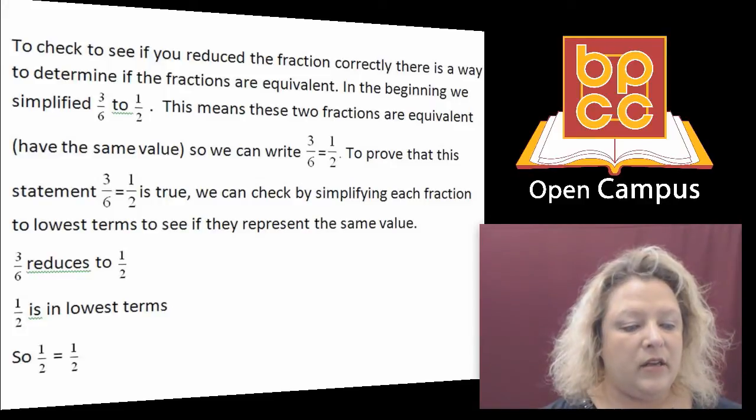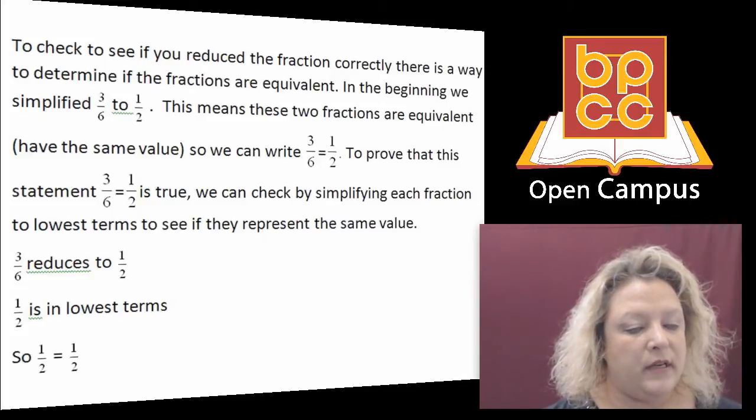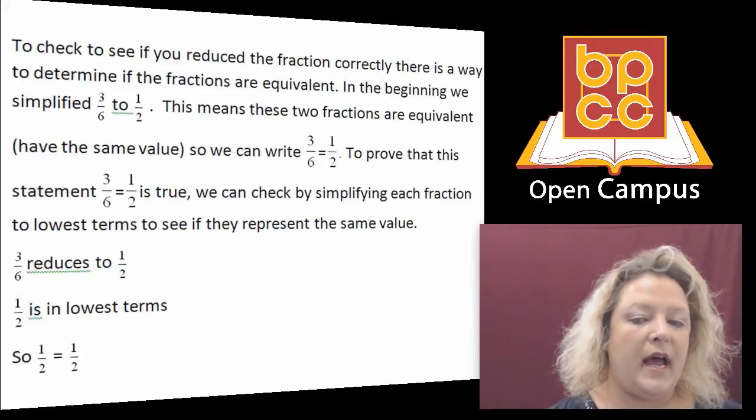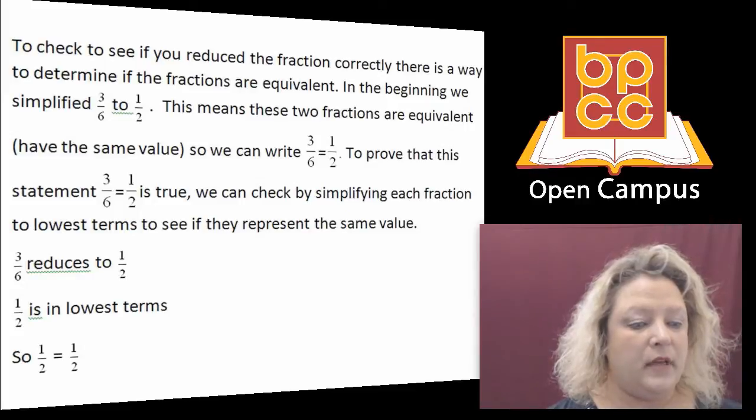If you look at this slide, it talks about the fact that 3 over 6 reduces. In the previous lesson, we talked about reducing or simplifying fractions to lowest terms. And we said that 3 over 6 reduces to 1 half. So the fraction 1 half and the fraction 3 sixth are what we call equivalent fractions because they represent the same amount of information.